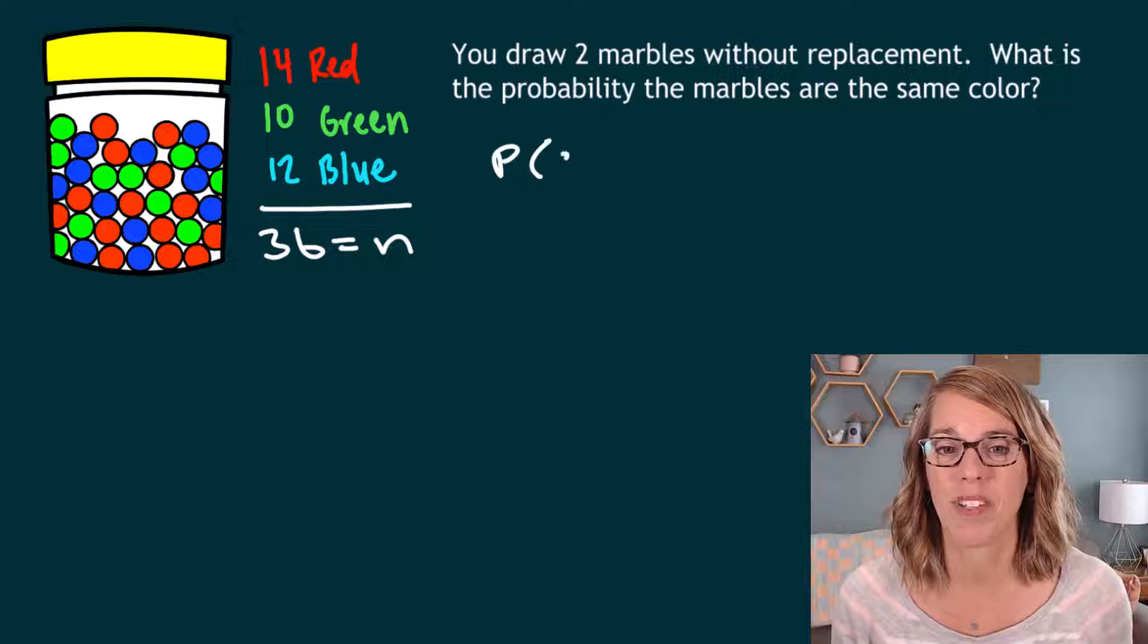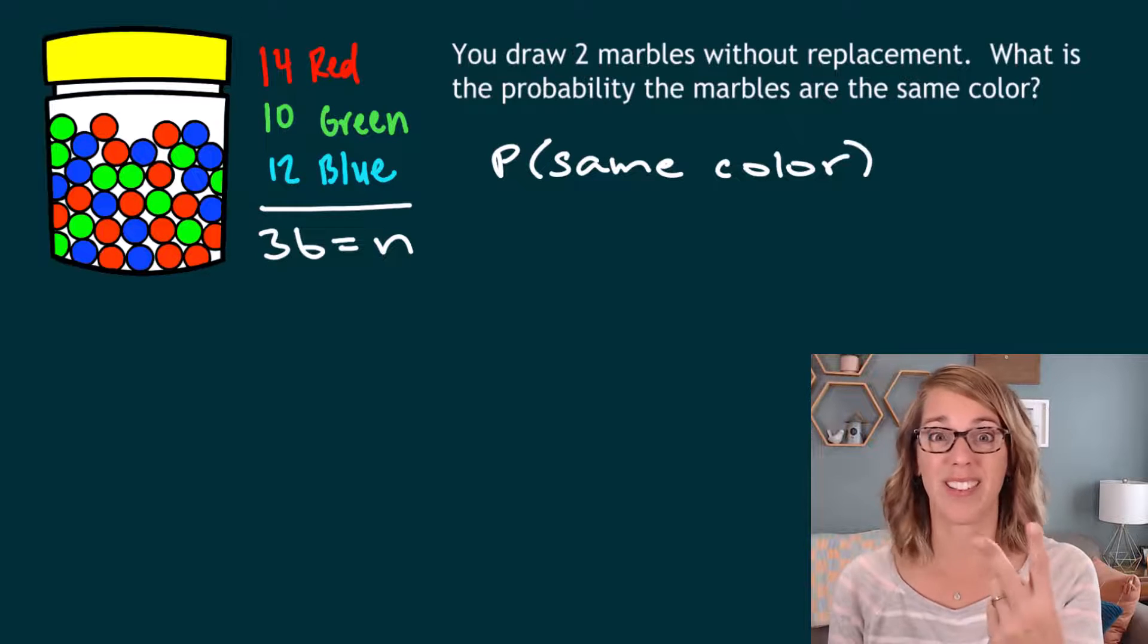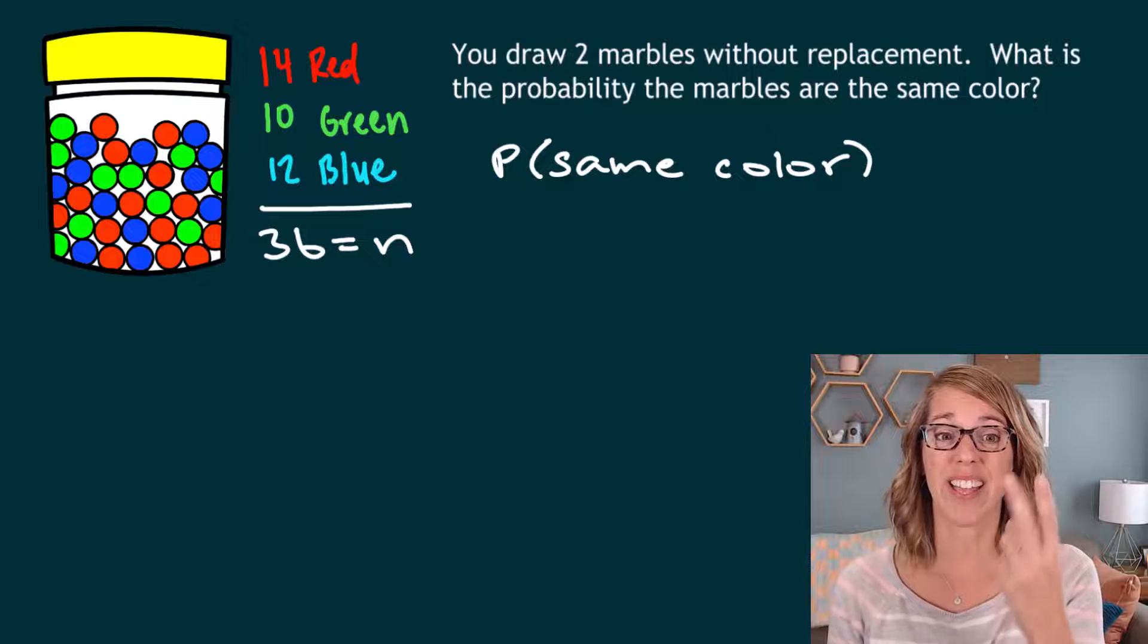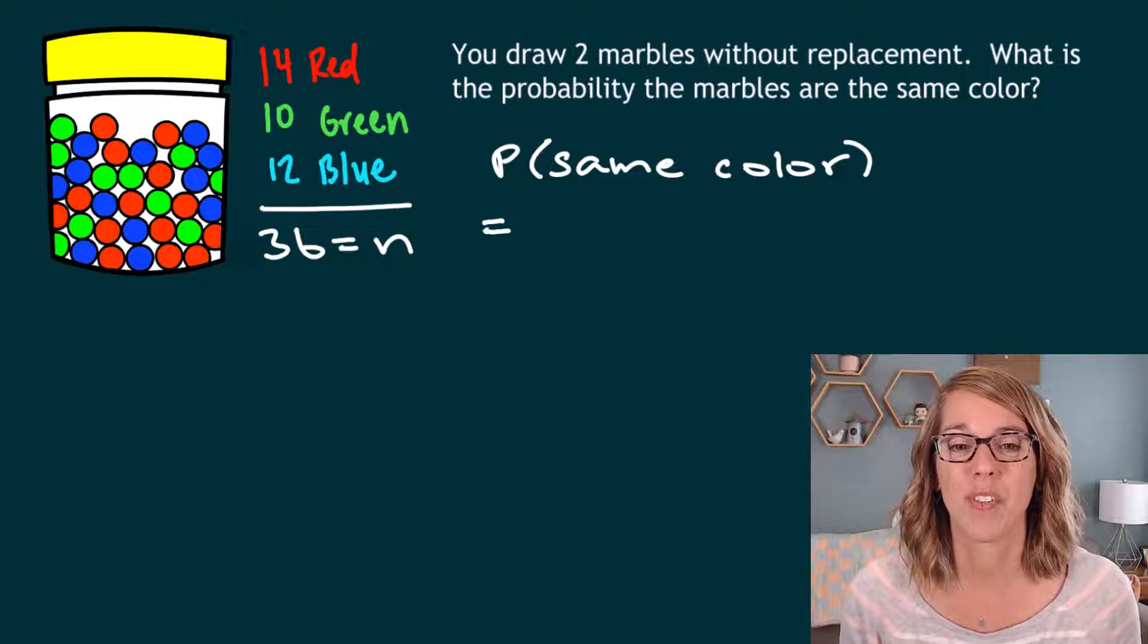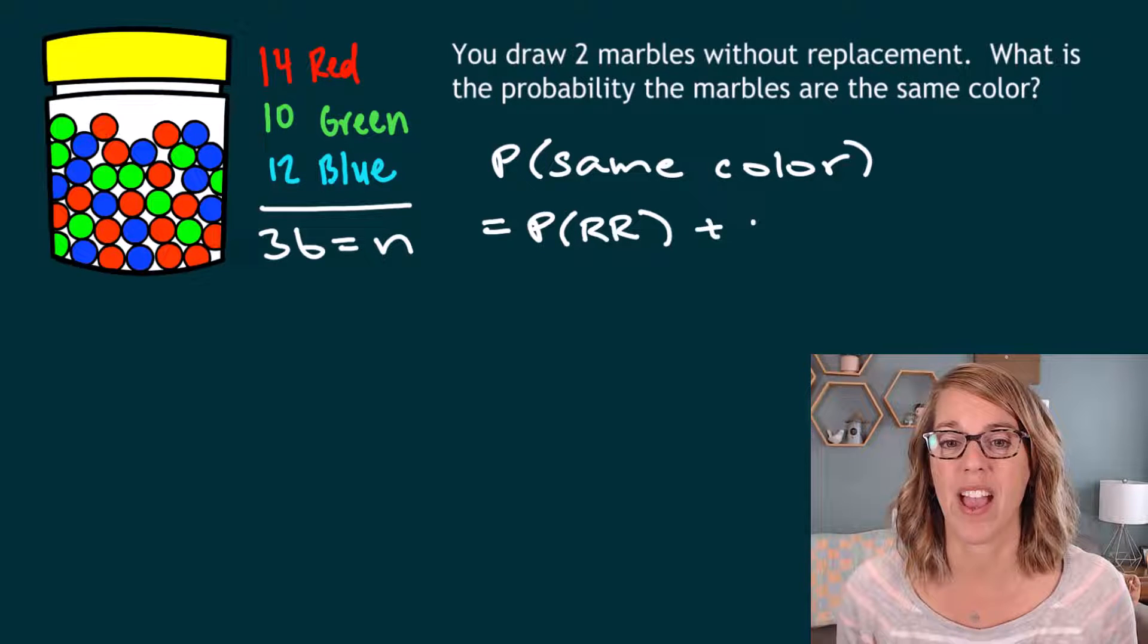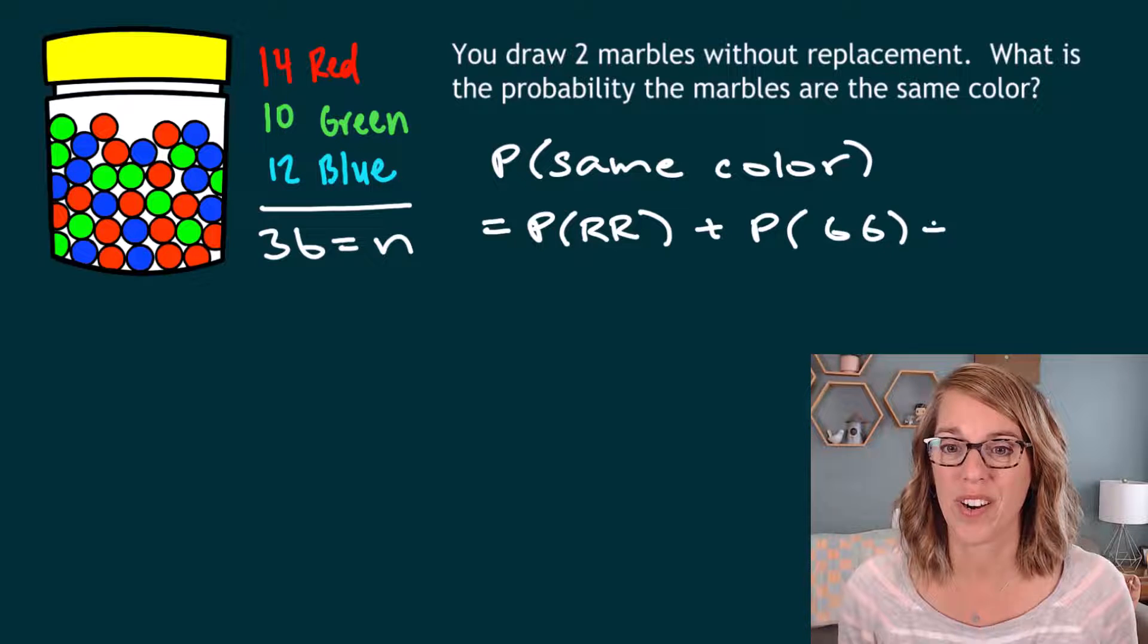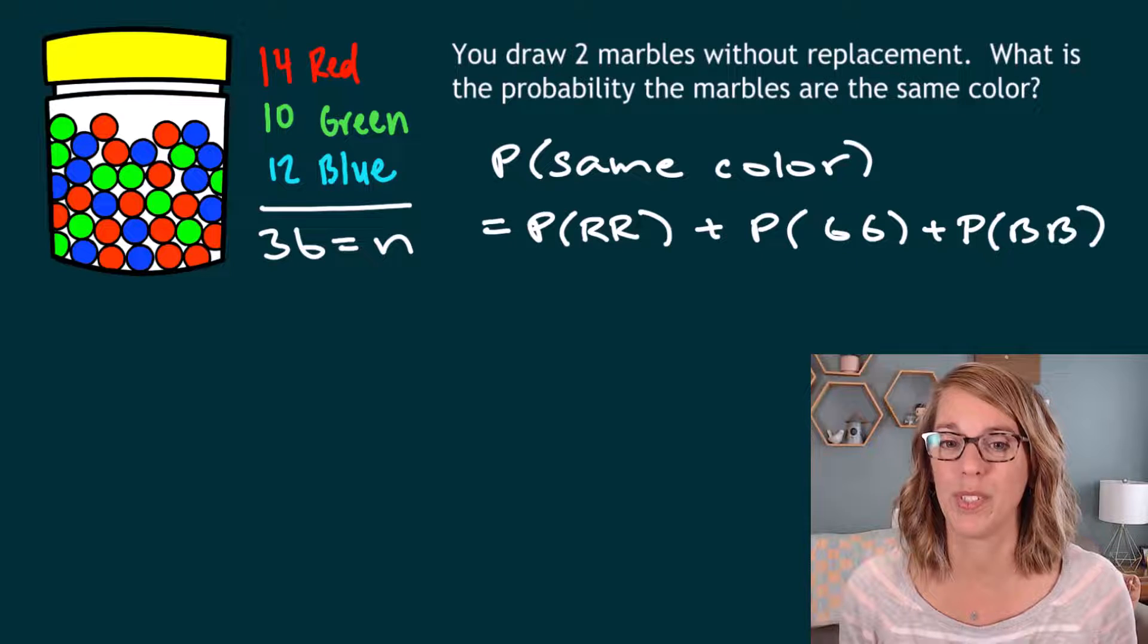So this is the probability again of the same color, but now I can use two reds together. I can get two greens together, or I can get two blues together. So this would be the probability of red, red, or, which we know we can add, the probability of green, green, or, so again, we're going to add the probability of blue, blue.